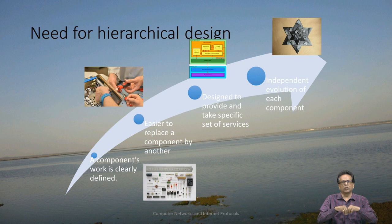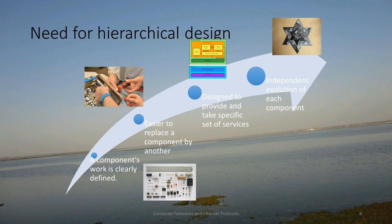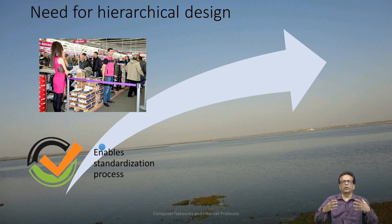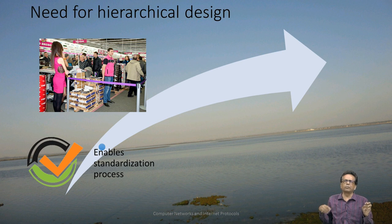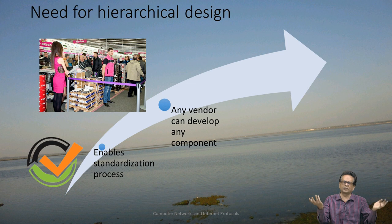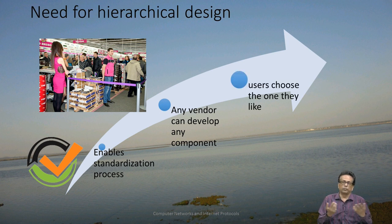Because they are independent, different components can evolve on their own. For example, IP evolved from IP version 4 to IP version 6, and Ethernet, which is the lower two layers, evolved from 10 MB Ethernet to a much higher TB-level Ethernet. This layered approach enables a standardization process — you cannot replace one component by another unless there is a standard which both follow. Any vendor can develop any system because there is a standard available; if I develop a browser, it will work with any web server, on top of any computer, on top of any network interface card.